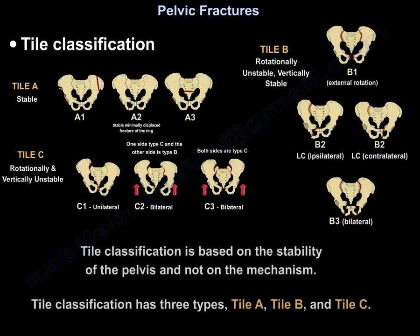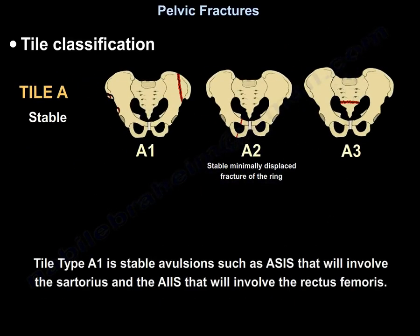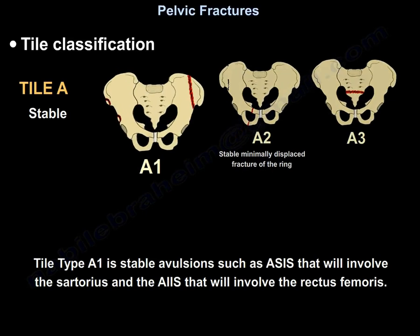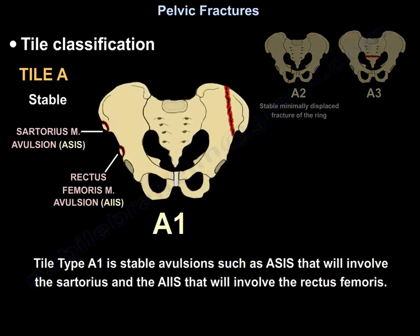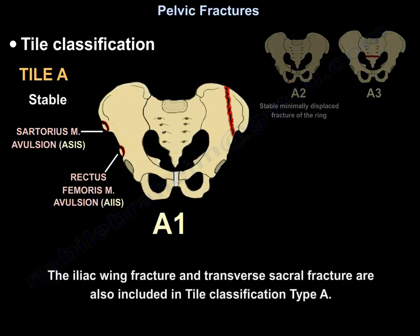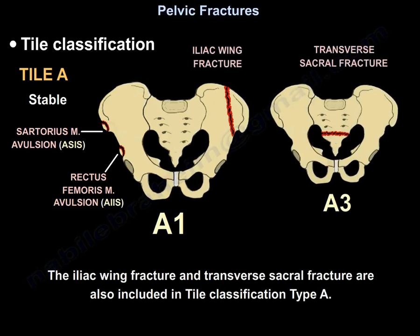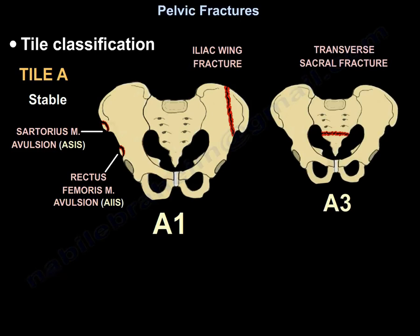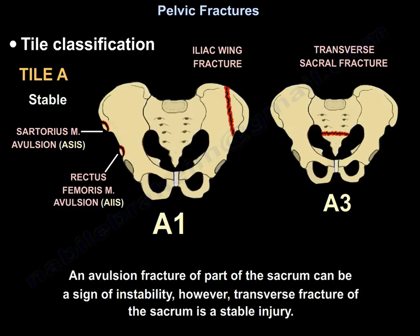The Tile classification is based on the stability of the pelvis and not the mechanism. There are Type A, Type B, and Type C. Type A is stable - avulsions such as anterior superior iliac spine involving the sartorius, and anterior inferior iliac spine involving the rectus femoris, the iliac wing fracture, and transverse sacral fracture are also included. An avulsion fracture of part of the sacrum can be a sign of instability; however, a transverse fracture of the sacrum is a stable injury.